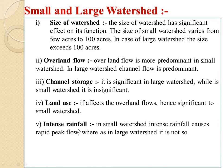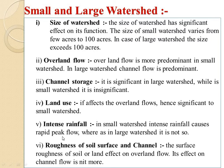In small watersheds, intense rainfall causes rapid peak flow, whereas in large watersheds it is not so. Regarding roughness of soil surface and channel, the surface roughness of soil or land has an effect on overland flow, and its effects on channel flow need more consideration.